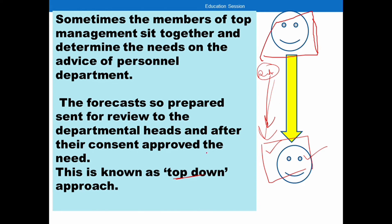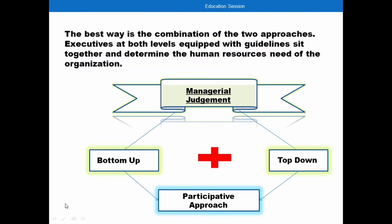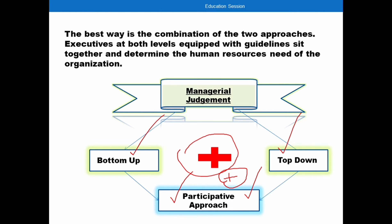When we mix the bottom-up and top-down approaches, the whole organization makes decisions together about what the HR demand will be. This process is called the participative approach — it is a combination of bottom-up and top-down where the whole organization and all departmental heads together focus on the HR requirements.